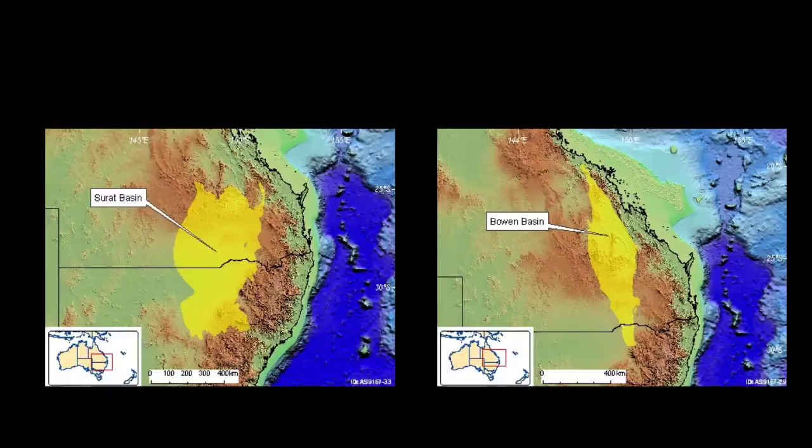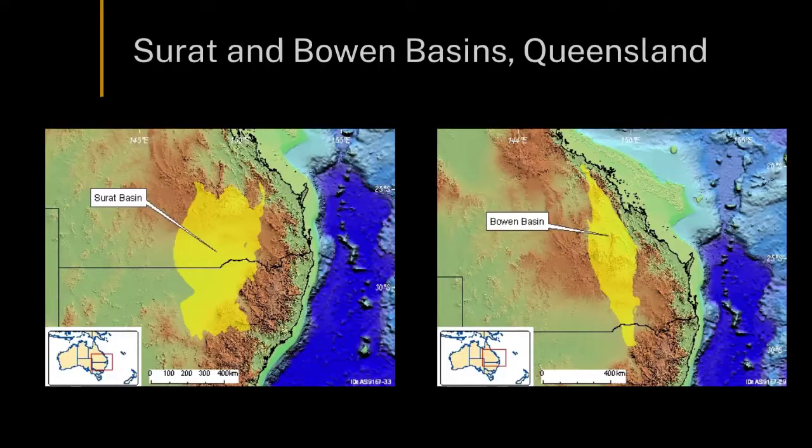So first of all, what is coal seam gas? Coal seam gas is predominantly methane that is found in coal beds, and in terms of the Australian context, most of the economic deposits are located in the Surat and the Bowen Basins in Queensland.